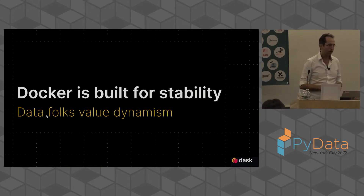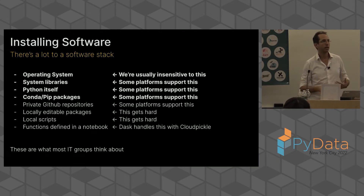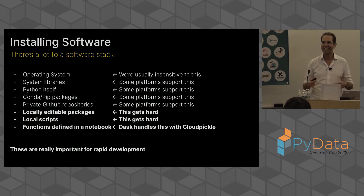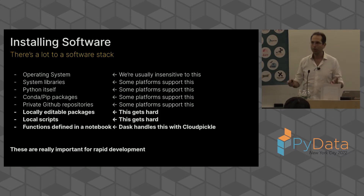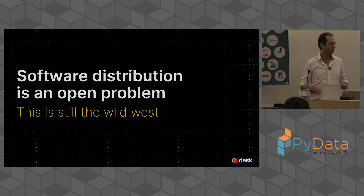We have these different software stacks. Most IT groups think of this problem as just the top of the stack — take some conda packages, make Docker images, and we're good. But the lower layers are also really important, especially if you have data science teams trying new things. I encourage you to at least be aware that this problem exists. This is still a super open problem — the thing I showed you in Coiled is also somewhat broken. This is a Wild West problem. This is not solved.